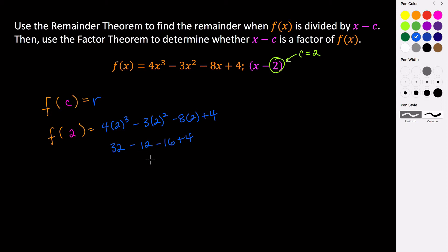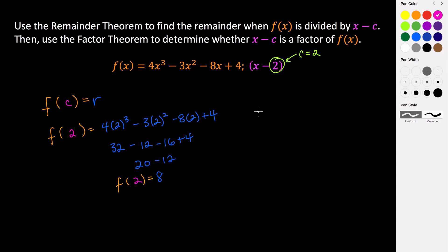32 minus 12 that's 20, and then 20 minus 16 plus 4 — that's negative 12, so 20 minus 12 is positive 8. So f of 2 is equal to 8. When we evaluate our function at the x value of 2 we get a remainder of 8.